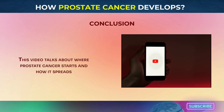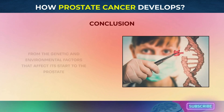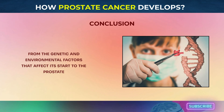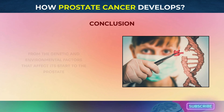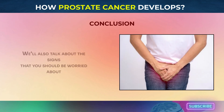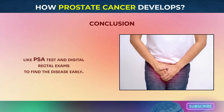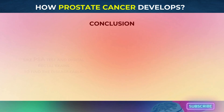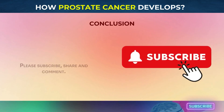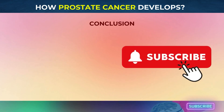This video talks about where prostate cancer starts and how it spreads, from the genetic and environmental factors that affect its start to the prostate gland itself. We also discuss the signs that you should be worried about and how important it is to get regular screenings like PSA tests and digital rectal exams to find the disease early. Please subscribe, share, and comment if you find this information useful. This will help get the word out about prostate cancer.